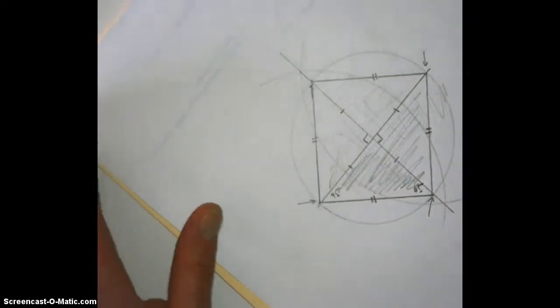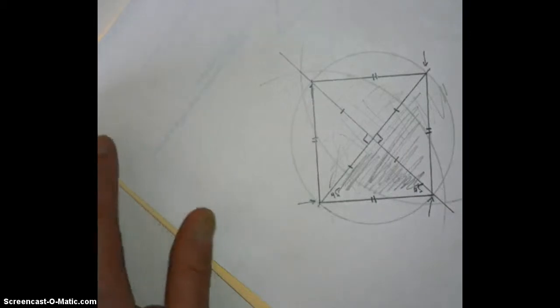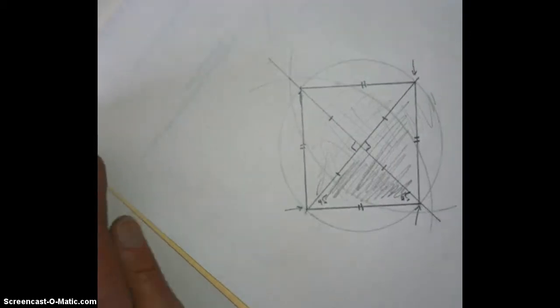So there's four smaller 45-45-90s and four larger 45-45-90s. And that's good to know for when you see problems involving a square and its diagonals.